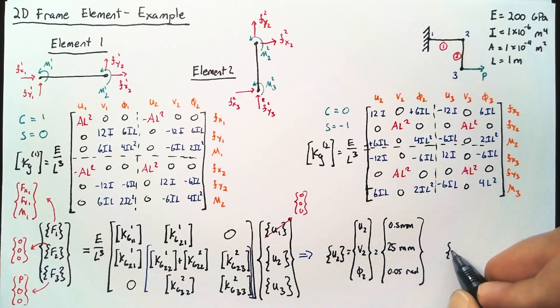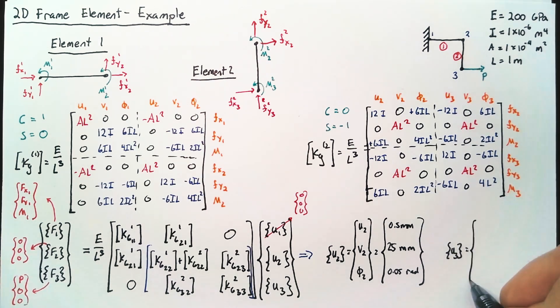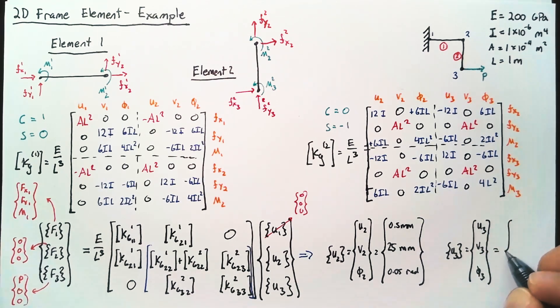And we can also find U3, which is just our three displacements for node 3. And those are equal to 67 millimeters, 25 millimeters again, and 0.075 radians.